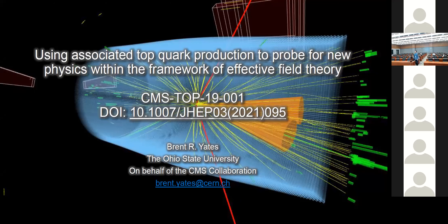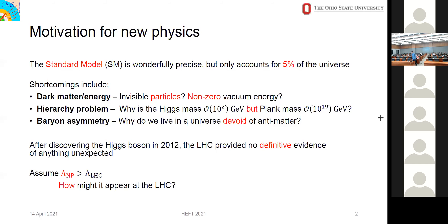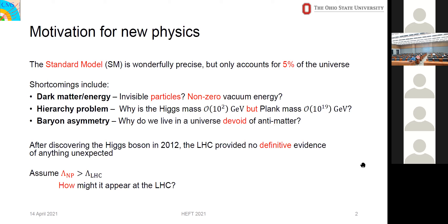Just a quick slide on some motivation for new physics. The standard model is a wonderfully precise piece of work, but it only accounts for 5% of the known universe. Shortcomings include dark matter and dark energy, invisible particles, non-zero vacuum energy, the hierarchy problem — why is the Higgs mass on the order of the electroweak scale when the Planck mass is much, much higher — and signs of baryon asymmetry: why do we live in a universe devoid of antimatter?